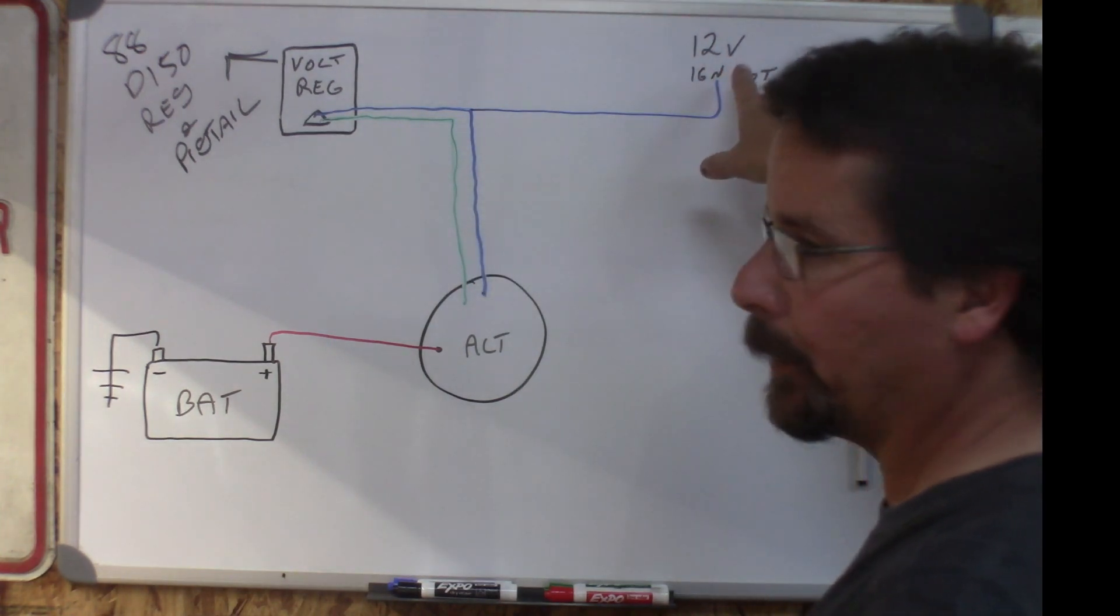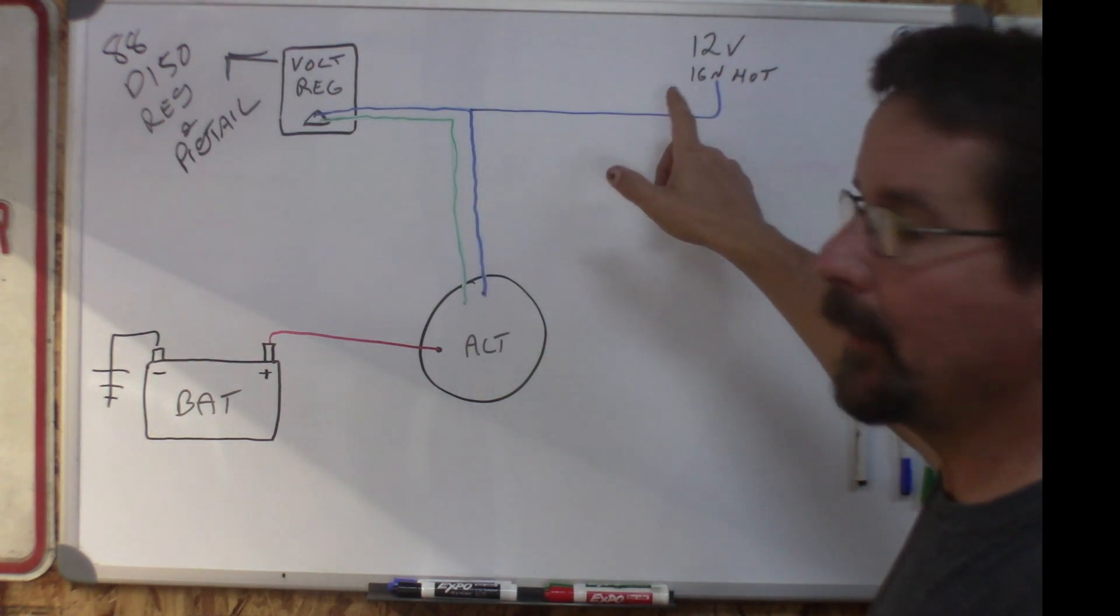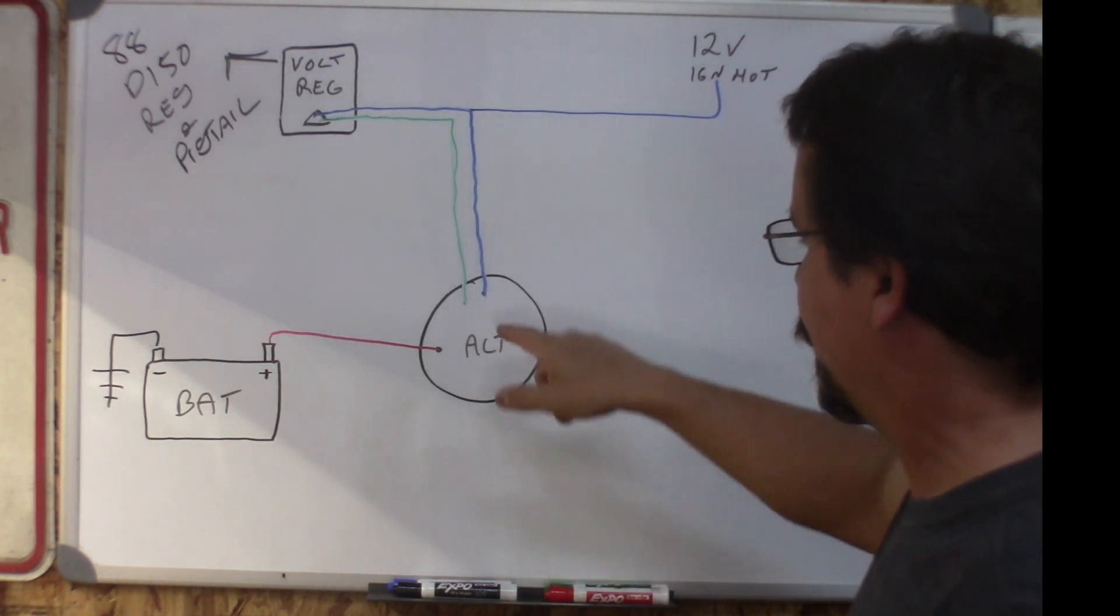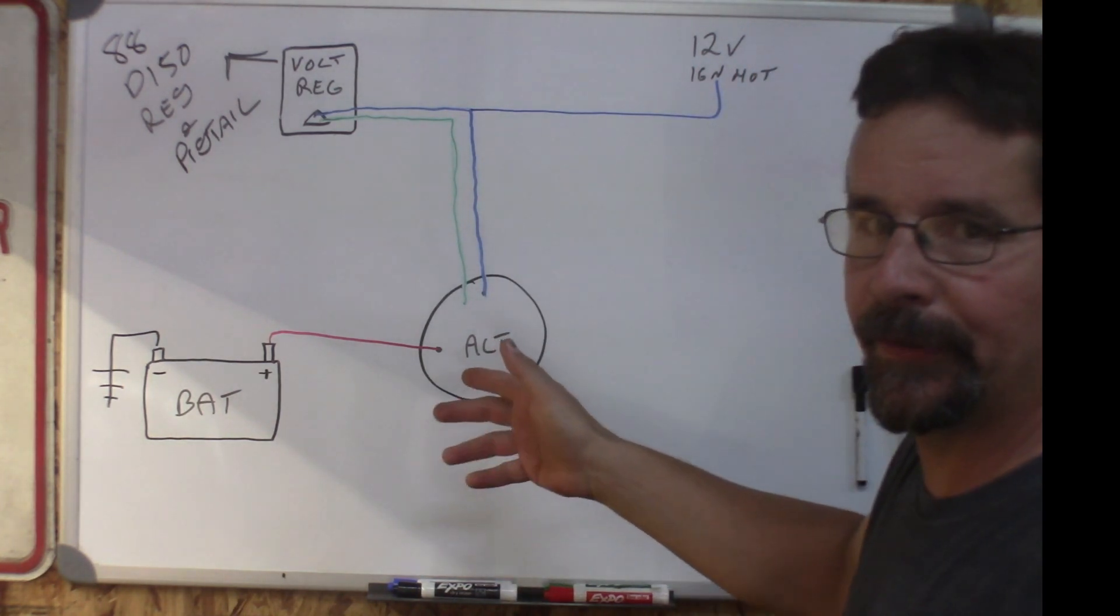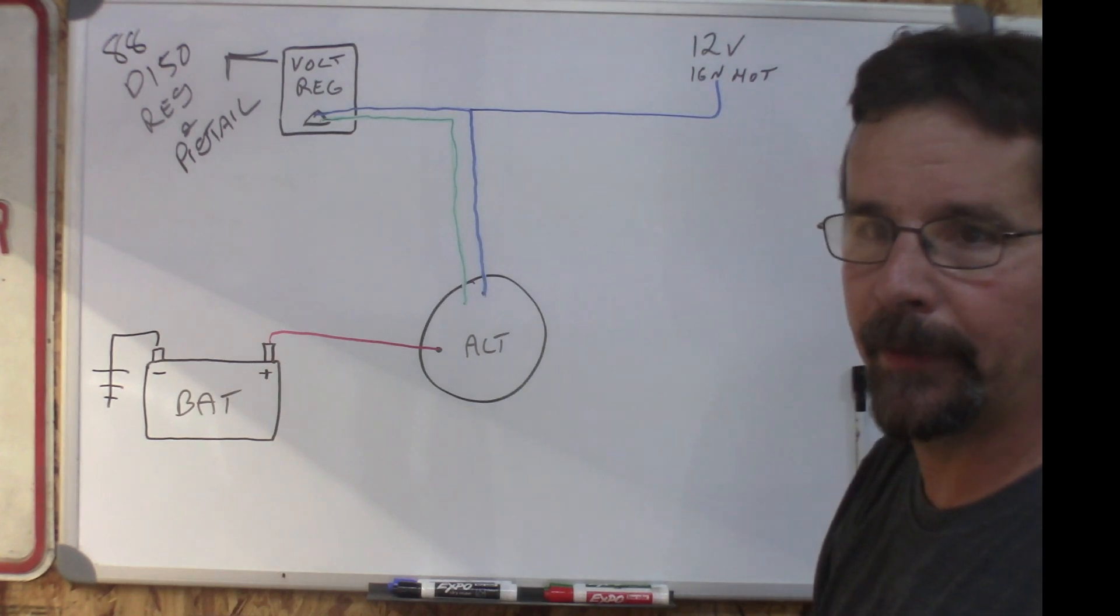But this up here is critical. This top one has to be teed off and go to 12 volt ignition hot, otherwise if you don't have a switch in there your alternator is going to stay energized constantly and drain the battery when the vehicle is not running.